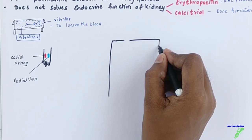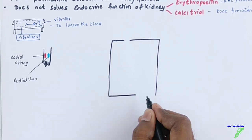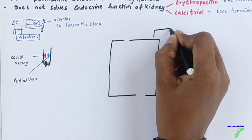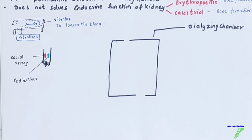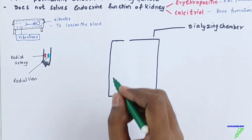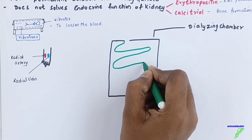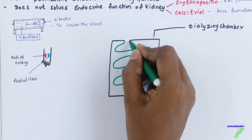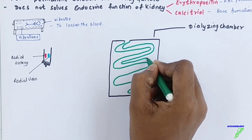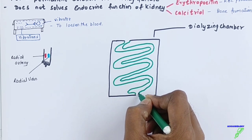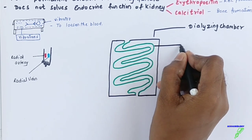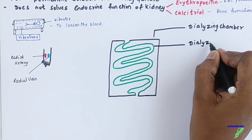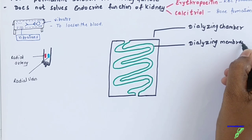Now let us draw the dialysis machine. This machine has a chamber called the dialyzing chamber — the chamber in which dialysis takes place. Inside the dialyzing chamber there is a very special selectively semi-permeable membrane. This membrane is permeable to all nitrogenous waste, ions, and salts, so nitrogenous waste is transferred out and needed ions and salts are added back into the blood.